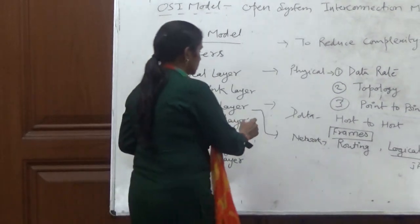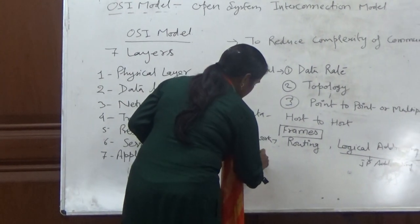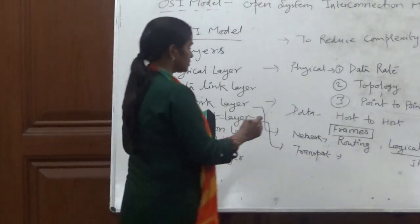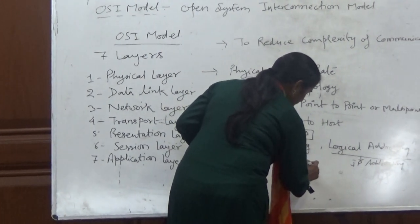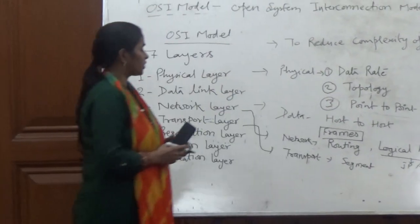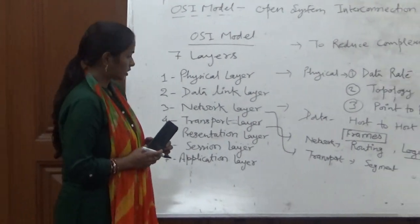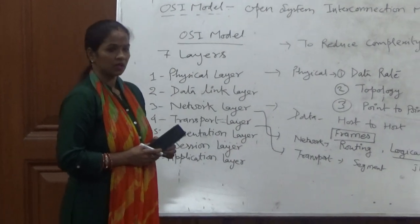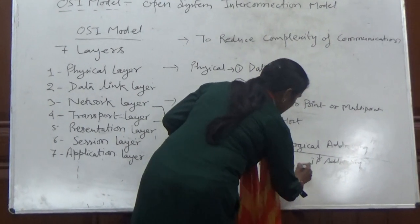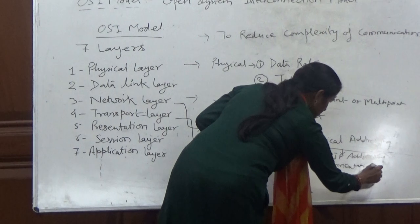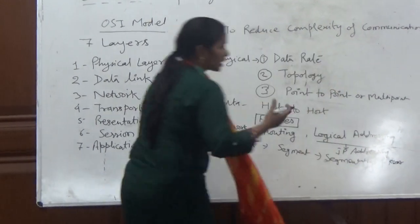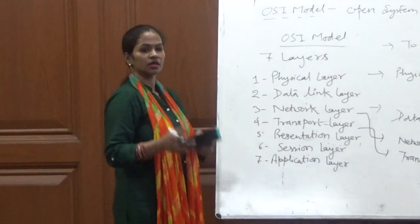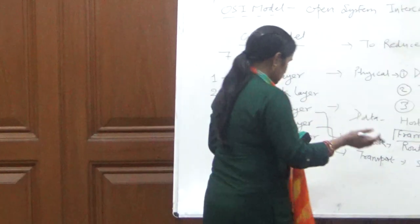The transport layer segments the information coming from the application layer. The main functions of the transport layer are error control, flow control, and segmentation and reassembly — meaning whatever information is sent from sender to receiver is segmented first and then reconstructed at the receiver's end.